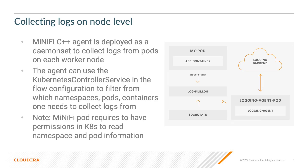Our next approach is collecting logs on a node level, which means deploying a daemon set with MiNiFi applications. One MiNiFi will be available on every node to collect logs from each pod, container, and namespace we define. To do this, we use the Kubernetes controller service in the MiNiFi flow file to filter which namespaces, pods, and containers to collect logs from. One important note: we need to give permissions to the MiNiFi pod to read Kubernetes namespace and pod information, done by creating cluster roles and cluster role bindings for the specific namespace where we deploy MiNiFi.